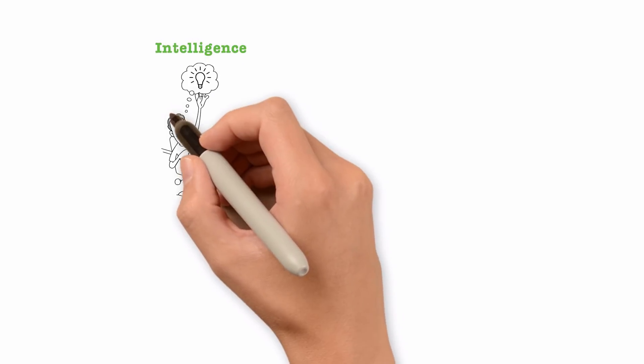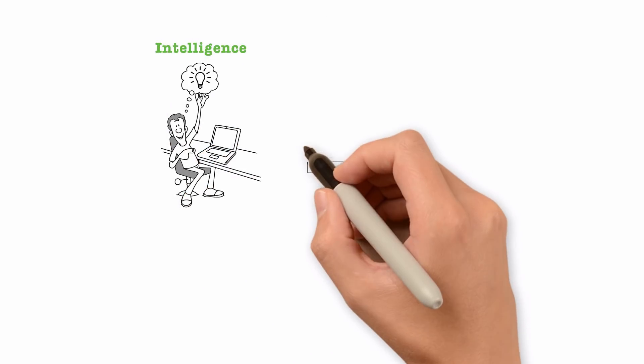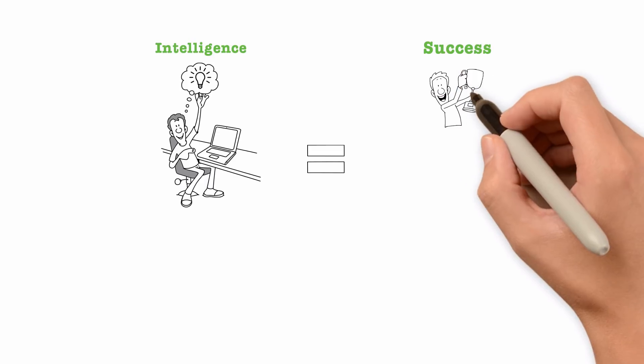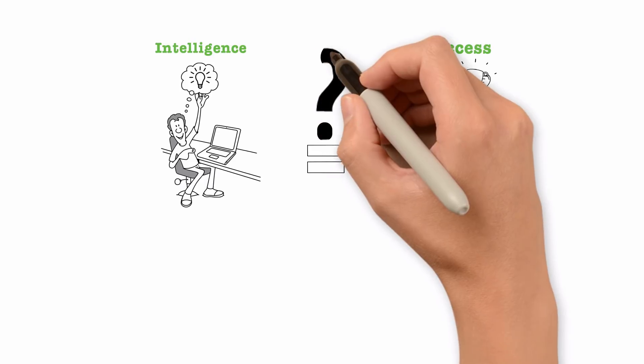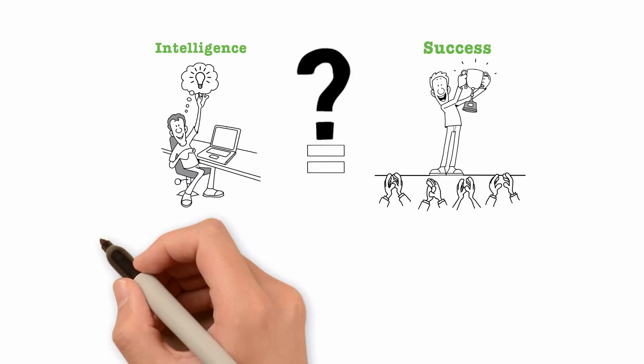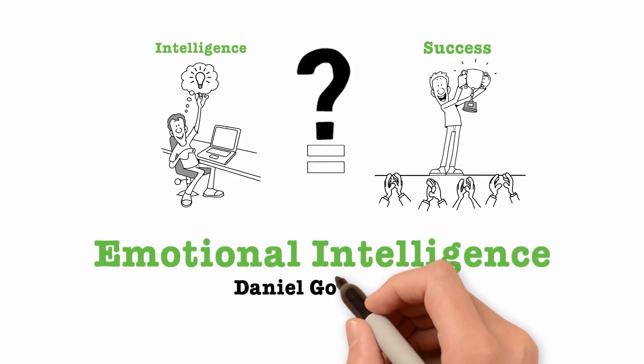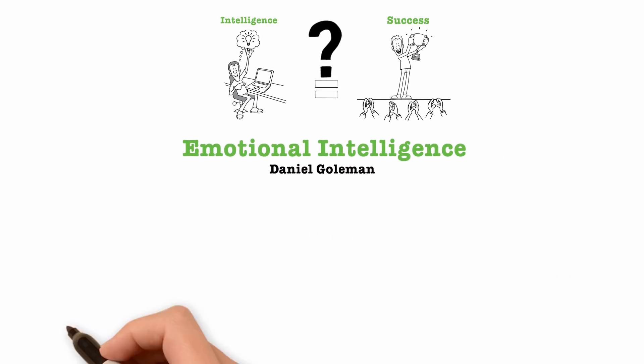Most people believe that their level of intelligence or IQ is the greatest indicator of success in life. But is it scientifically true? Let's dive into the book Emotional Intelligence by Daniel Goleman and find out what the truth really is.